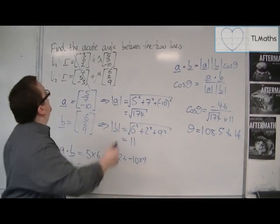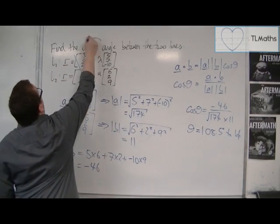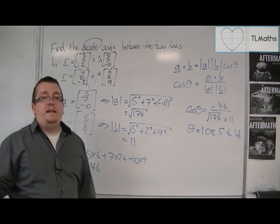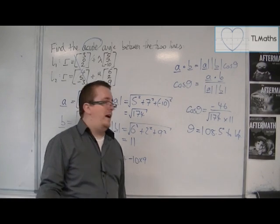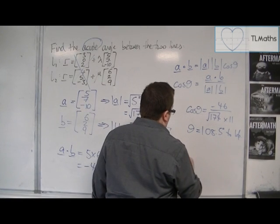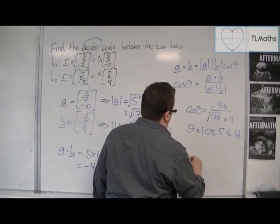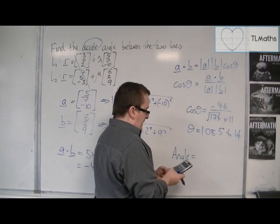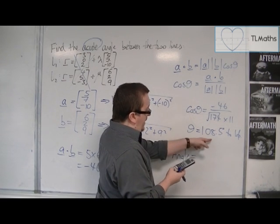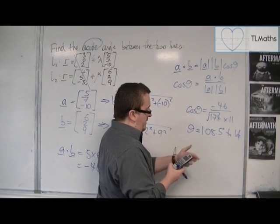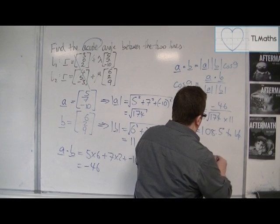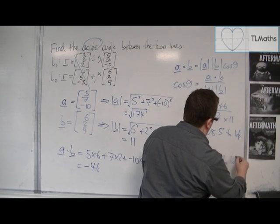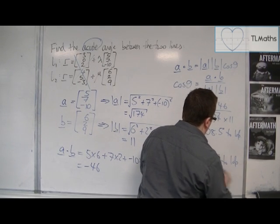The inverse cosine gives 108.5 degrees to one decimal place. But of course we're looking for the acute angle, so we need to subtract that from 180. So the angle is 180 − 108.5 = 71.5 degrees to one decimal place. And so that is the angle that those two lines make.